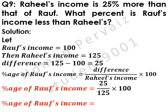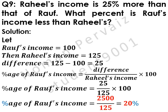Percentage of Raouf's income is equal to 25 multiplied by 100, which becomes 2500. If we divide 2500 by 125, it becomes 20%. Hence, this is our answer.